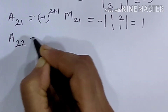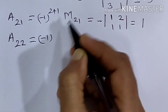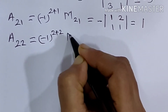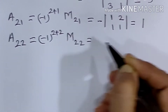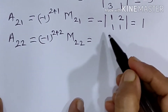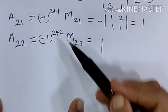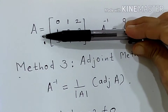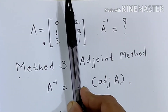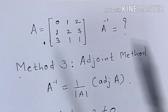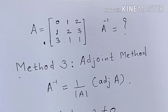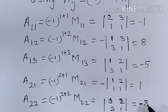Next, A22 is equal to minus 1 raised to 2 plus 2, into M22. The power is even, so we take positive of the determinant. Deleting the second row and second column gives the determinant with elements 0, 2, 3, 1. That equals 0 minus 6, equal to minus 6.